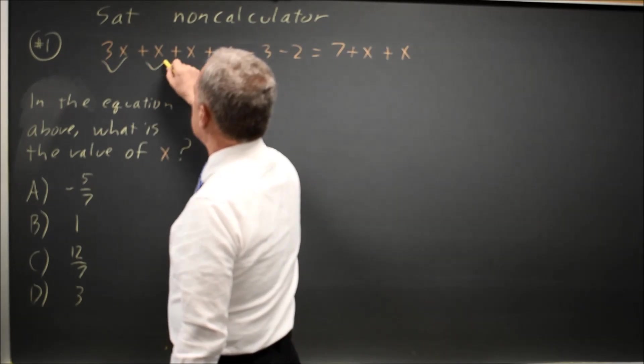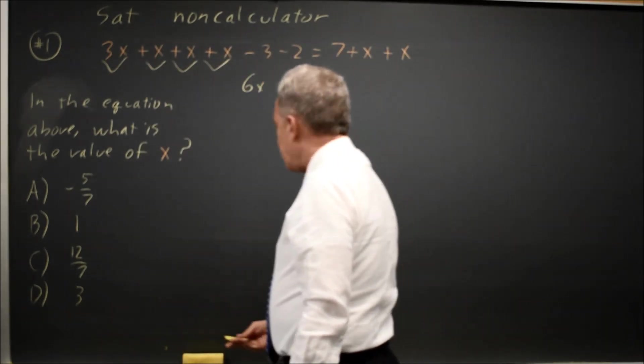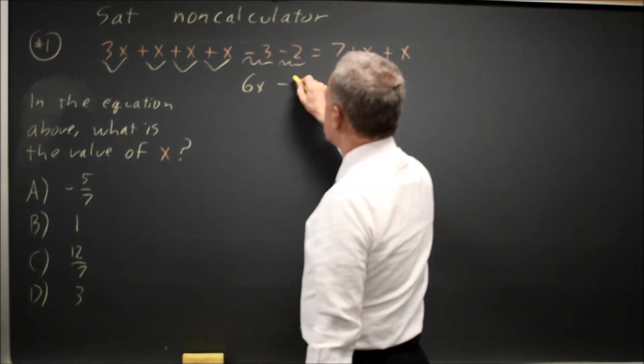I have 3x plus x plus x plus x. That's 6x. And I have negative 3 minus 2, which is negative 5.